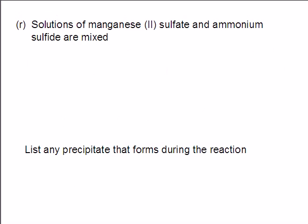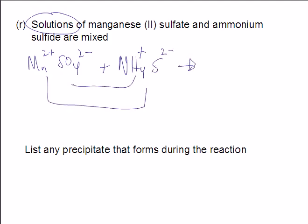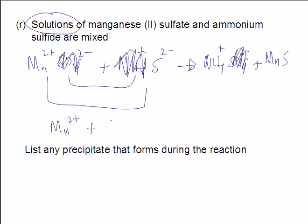Solutions of manganese(II) sulfate and ammonium sulfide are mixed. Manganese(II) sulfate, again, it says solutions. It's going to be broken into its ions. Mn2+ SO42-. And ammonium sulfide, NH4+ S2-, ammonium sulfide are mixed. I see ions, so I'm going to connect and cancel. I make NH4+ and SO42-. Those are soluble. And it looks like manganese sulfide is insoluble. I'm going to cancel my spectators. And I have my overall reaction. Mn2+ plus S2- goes to MnS.